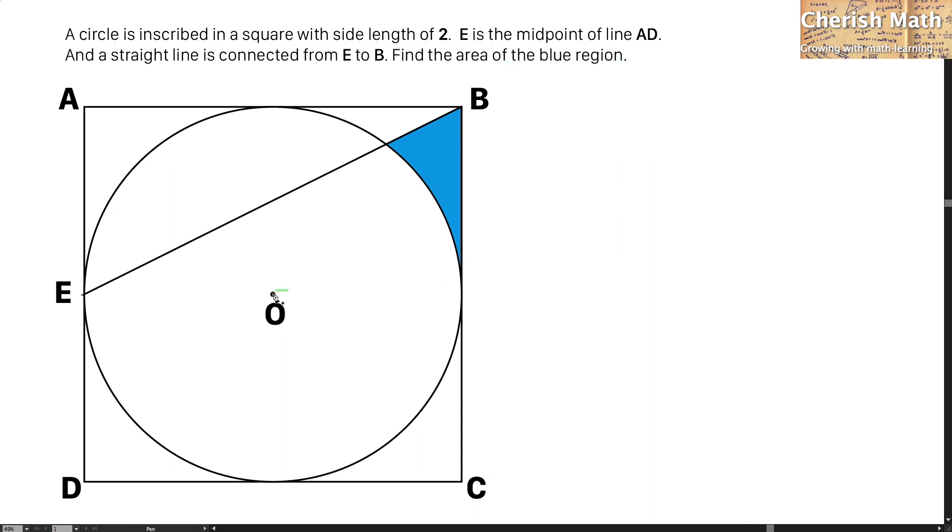In the first step, I connect a line from the center O to this point, and the second straight line connecting from the point E that works as a diameter. Let me label the point here to be F.